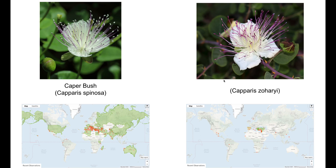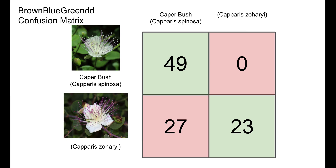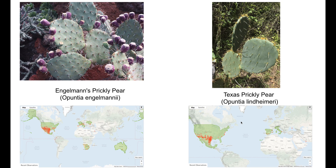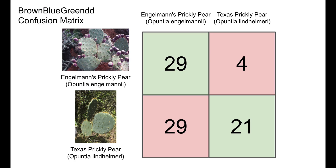Another difficult pair were these two plants. Interestingly, the distribution of the plant on the right looks like it's a subset of the distribution of the plant on the left. Looking at the confusion matrix for the top team, we can potentially see a quirk of that distribution where the top team had nearly perfect performance on the species with the broader distribution, but had a significant error rate for the species whose distribution was a subset of the other. These cacti from southern United States were also difficult for the top 10 teams, where again we see significant confusion between the two, particularly the Texas prickly pear.